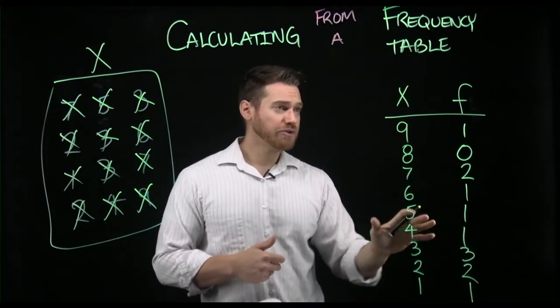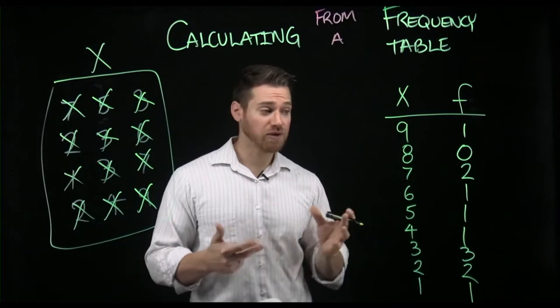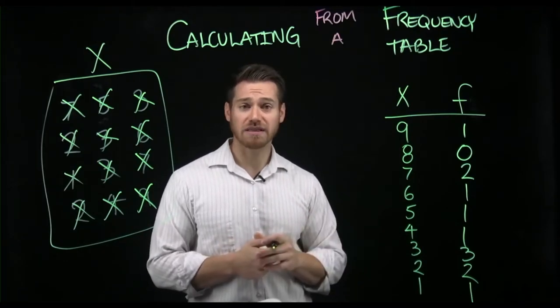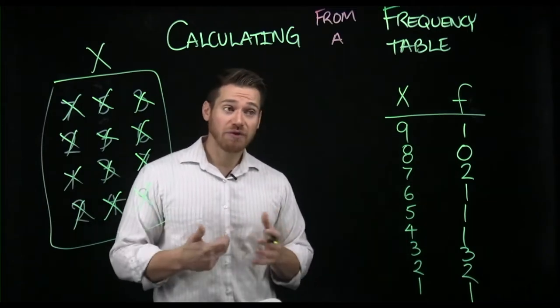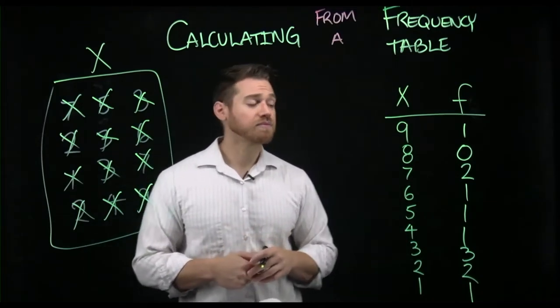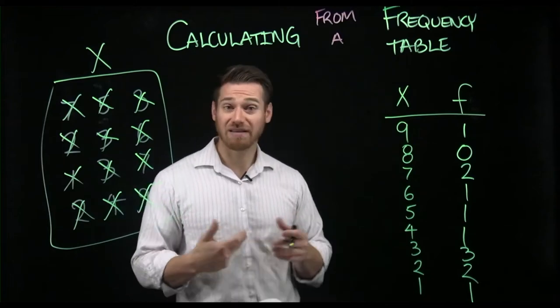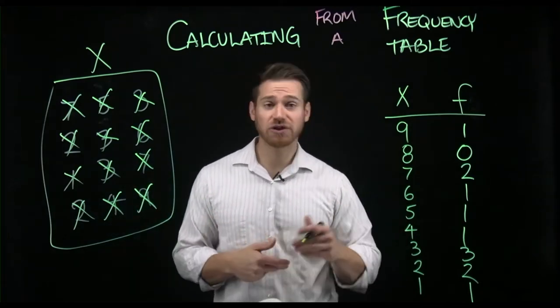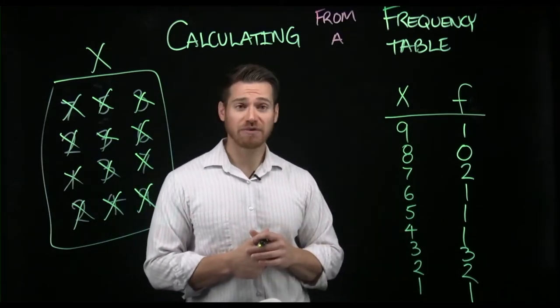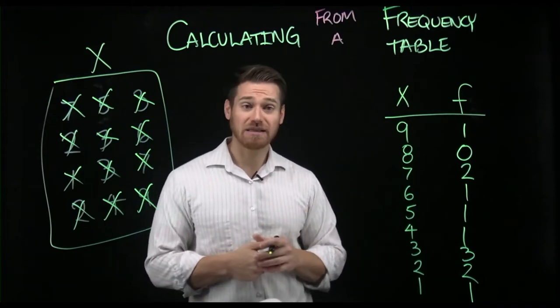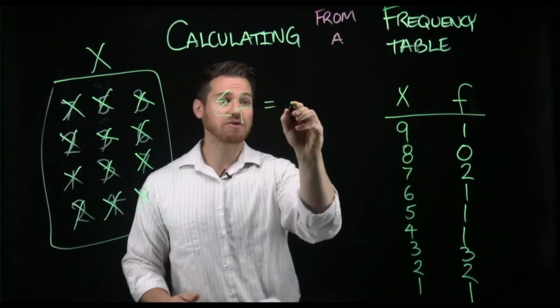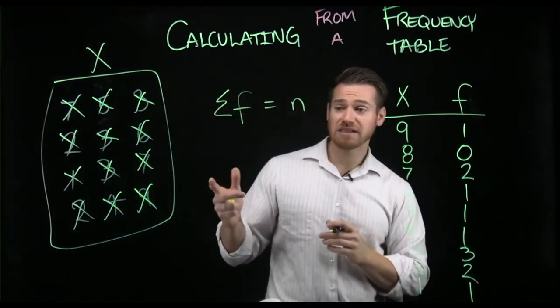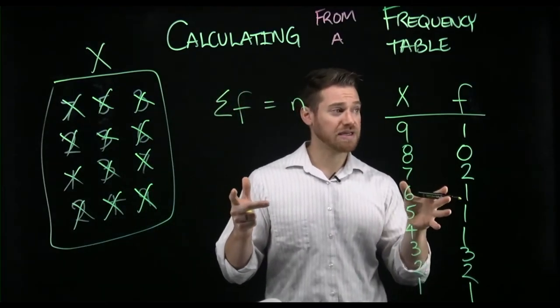So we could use this to make calculations and to get some other quick statistics for our data set. Your book goes through a few different examples of things we can do. For example, how to get the sum, how to quickly get an average, how to get the sample size. The sample size is simply the sum of f. So the sum of f equals n, which is the sample size. This is simply how many observations I have in my data.